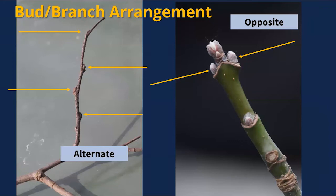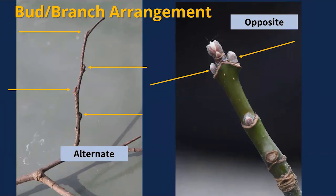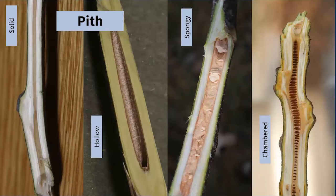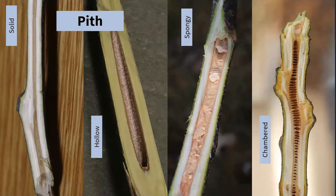Arrangement — bud or branch arrangement in winter — is key. The first question when identifying a tree is whether it's opposite or alternate. Whorled arrangements have three or more buds. Opposite has two buds directly across from each other; alternate has one bud at a time alternating back and forth across the twig. That's the number one question to answer first. For a handful of species, the color and condition of the pith is also a useful identification characteristic.